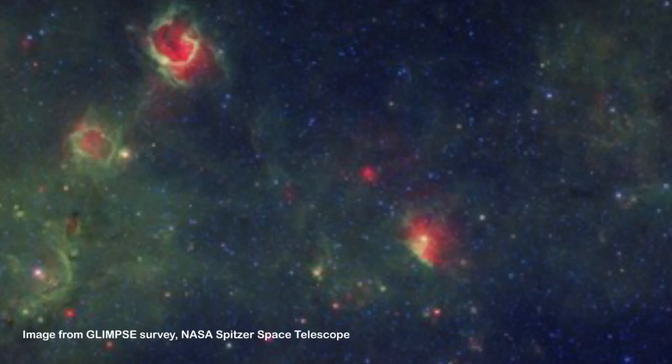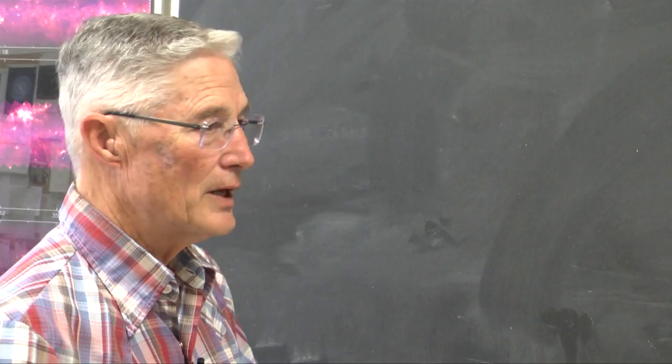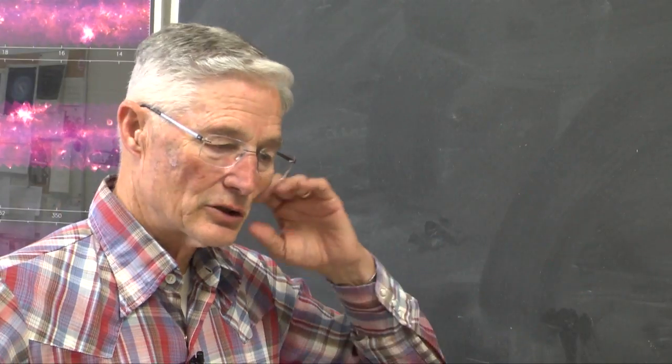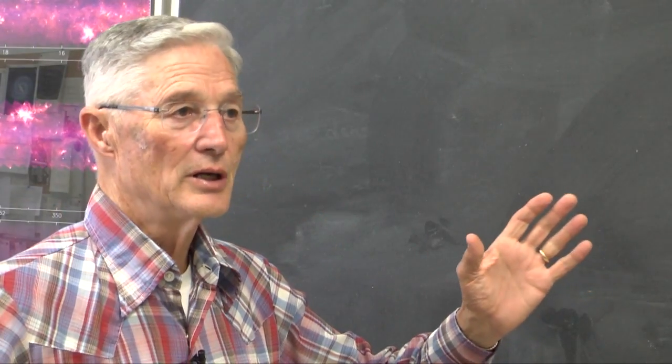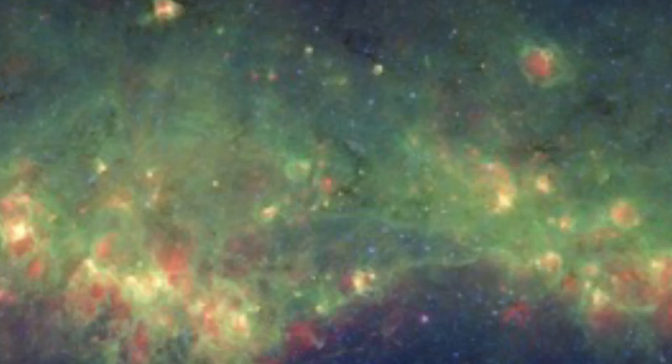Stars are formed in very large dark clouds. They're really molecular clouds made primarily of hydrogen and carbon monoxide. And these clouds of gas, cold, dense gas, can be hundreds of light years across.